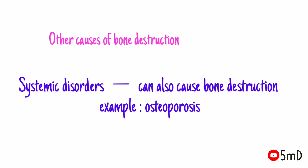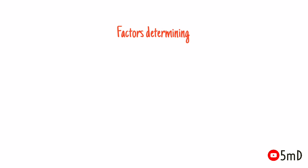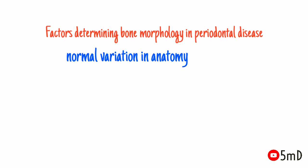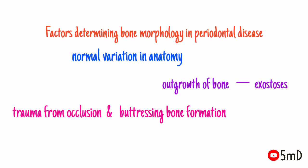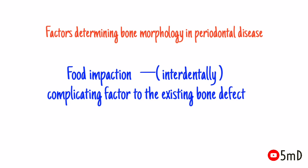Before seeing the bone destruction patterns in periodontal disease, let us see the factors determining bone morphology. Normal variation in alveolar bone anatomy, like thickness and width of the facial and lingual surface or interdental septa, outgrowths of the bones known as exostosis, presence of trauma from occlusion, or buttressing bone formation — all these can affect the pattern of bone destruction. Sometimes presence of food impaction interdentally can occur as a complicating factor to the existing bone defect.